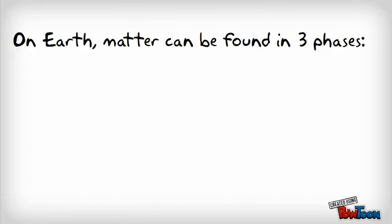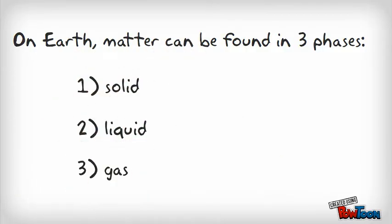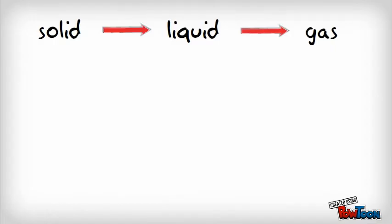You already know that most types of matter can be found in three phases on the Earth. Solids, liquids, and gases. Materials are most dense when they're solids, and least dense when they're gases.